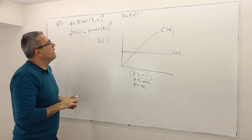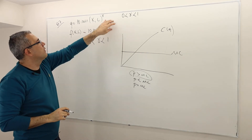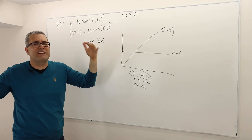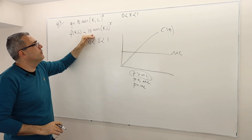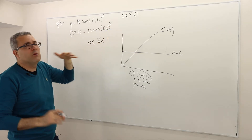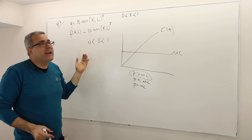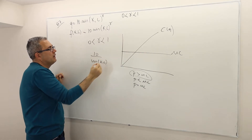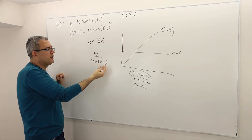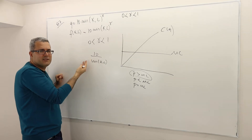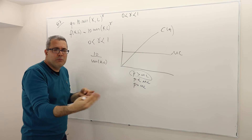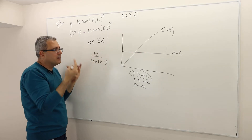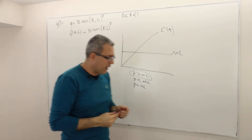Why does gamma have to be greater than zero? If gamma is zero, the production function has nothing to do with inputs — whether you use zero or thousands of inputs, you get exactly 10 units of output, which makes no sense. When gamma is negative, say negative one, you get 10 divided by minimum of K,L, meaning more input actually produces less output. So the sensible parameter range is the open interval (0, 1).